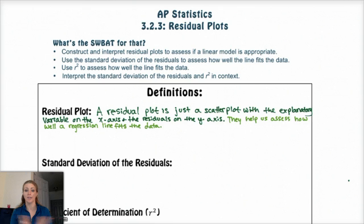Okay, so basically a residual plot is just a scatterplot with the explanatory variable, or whatever the x variable was already, on the x-axis, and then on the y-axis, instead of the response variable, put the residuals. And basically what a residual plot does is it helps us assess how well a regression line fits the data.